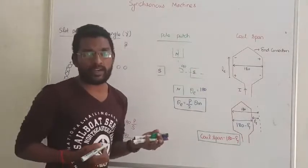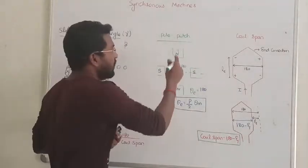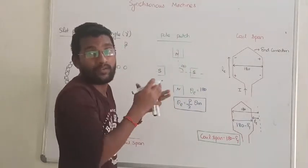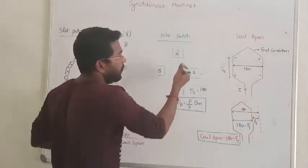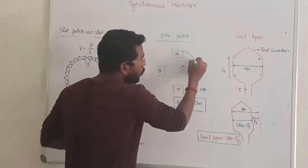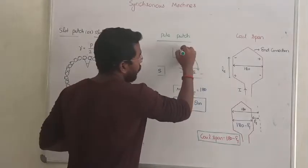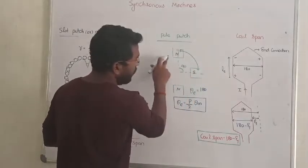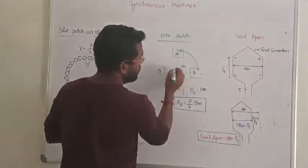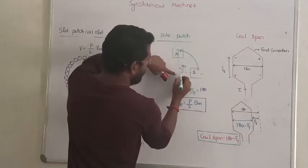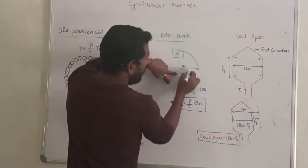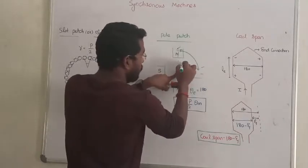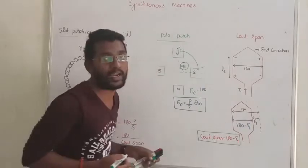Now, the pole pitch. Pole pitch is the mechanical phase displacement between two consecutive poles. So if we observe from the origin, the phase difference between the first pole and the second pole, mechanically, is 90 degrees for a 4-pole machine.